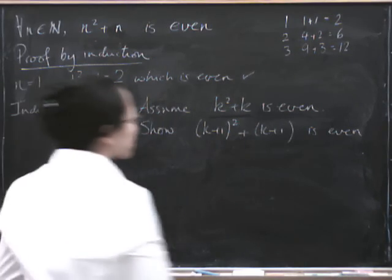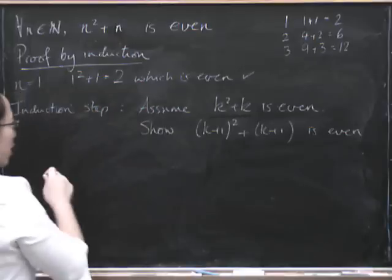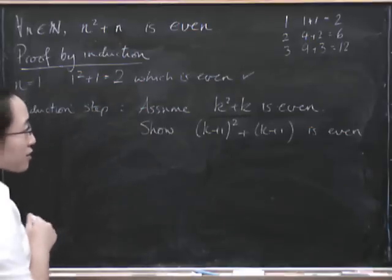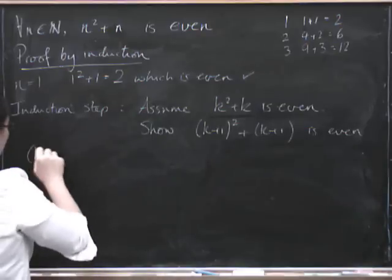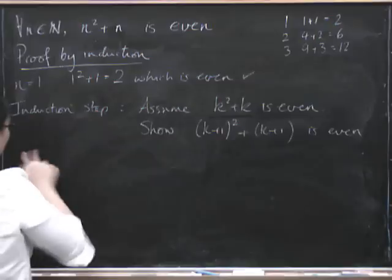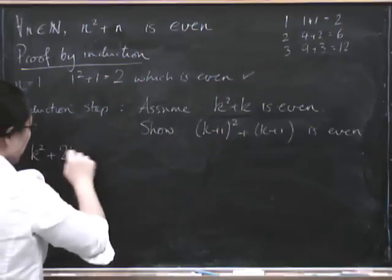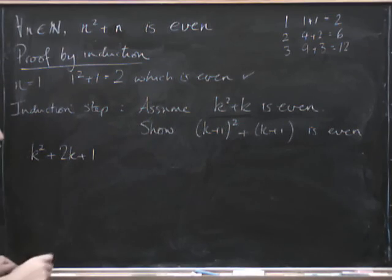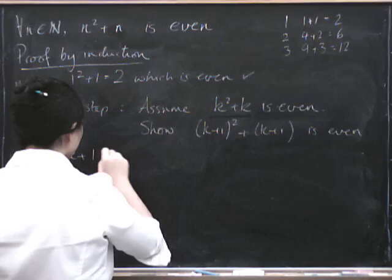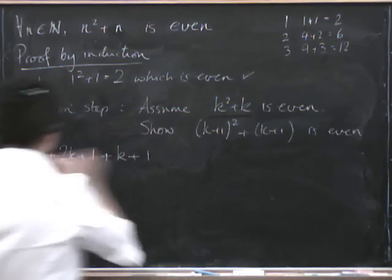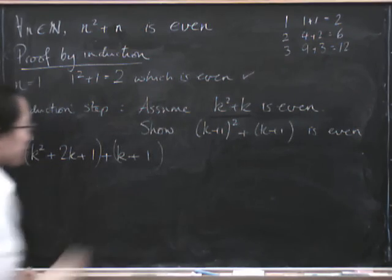Well, what is k plus 1 squared plus k plus 1? Let's write it out, shall we? It's k squared plus 2k plus 1 plus k plus 1. So this was the first part, and that's the second part.